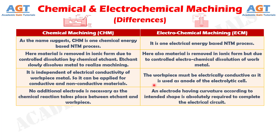Difference No. 4: In chemical machining, no additional electrode is necessary as the chemical reaction takes place between the etchant and the workpiece, whereas in electrochemical machining, an electrode having curvature according to the intended shape is absolutely required to complete the electrical circuit.